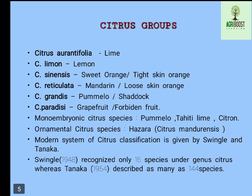Some monoembryonic citrus species are pamelo, Tahiti lime, and citron. Hazara, whose scientific name is Citrus madurensis, is an ornamental citrus species. The modern system of citrus classification was given by two scientists, Swingle and Tanaka, in 1948. Swingle recognized only 16 species under the genus Citrus, whereas in 1954 Tanaka described as many as 244 species.